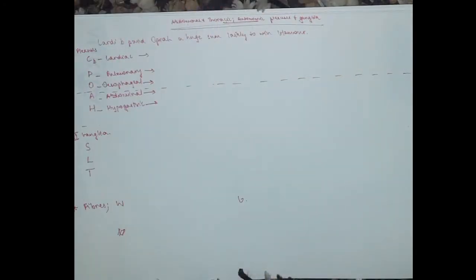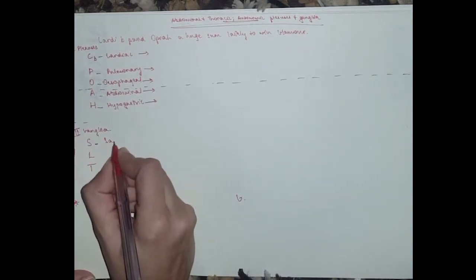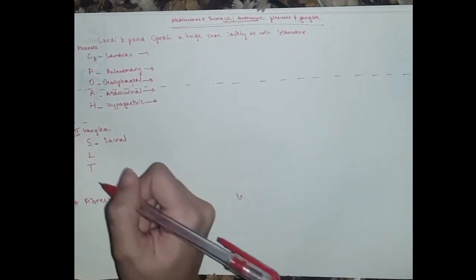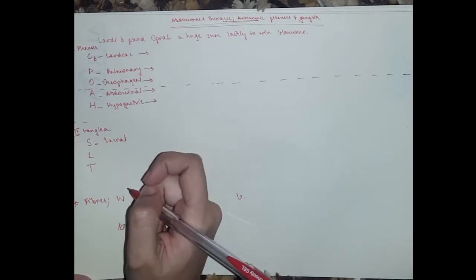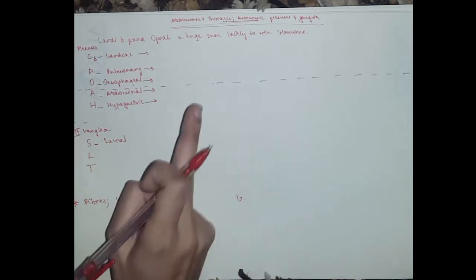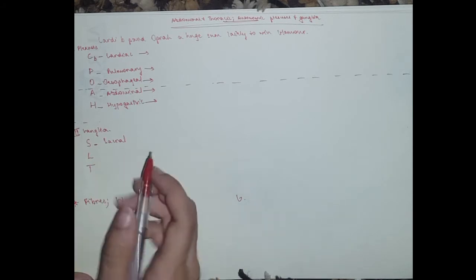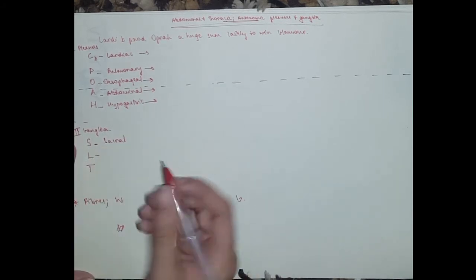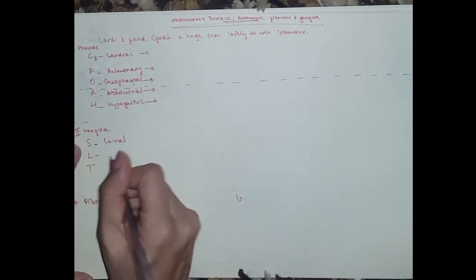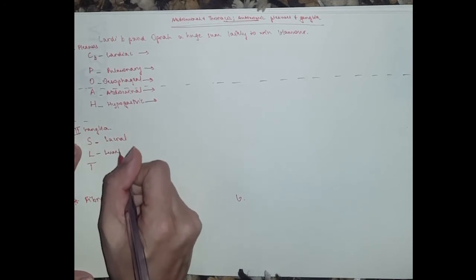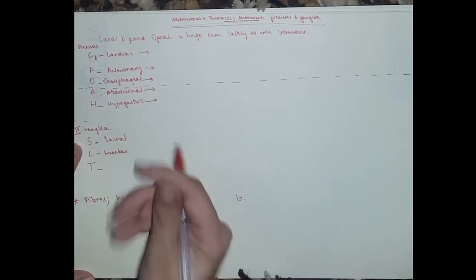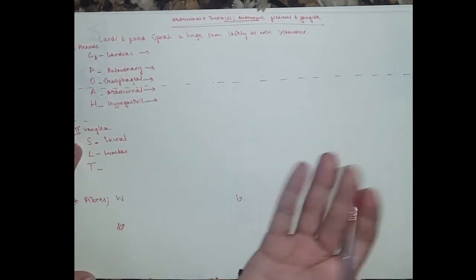Yeah, the ganglia S would be for sacral. If you remember from the last couple, no I think the sympathetic video lecture, that these three are mentioned. You have got the sacral one, you've got the lumbar ganglia, you've got thoracic and the cervical.